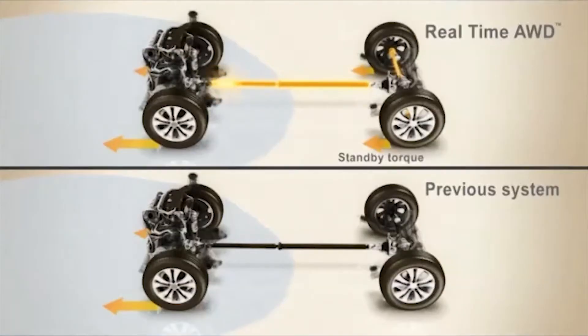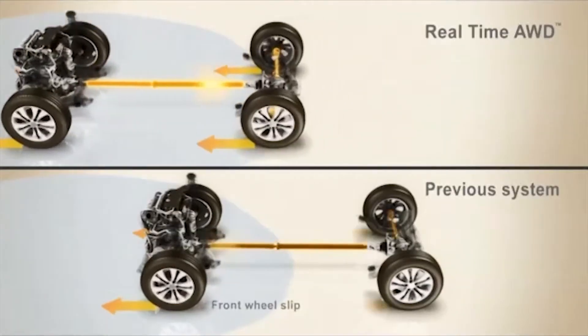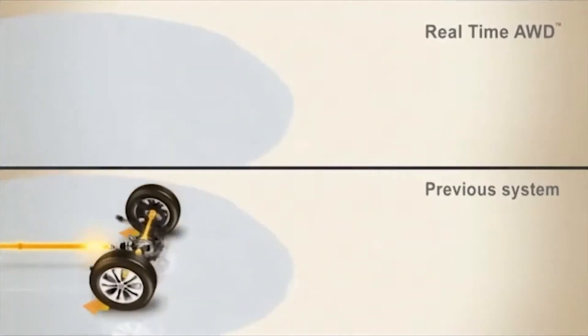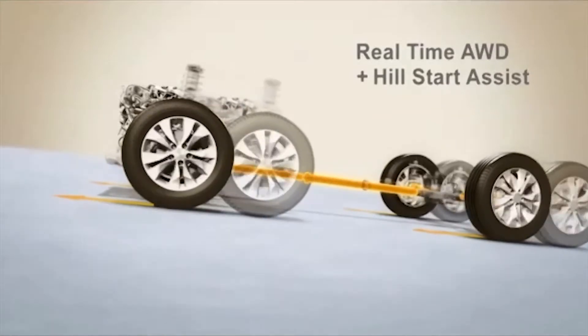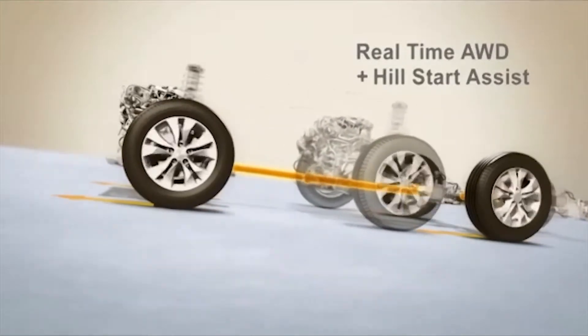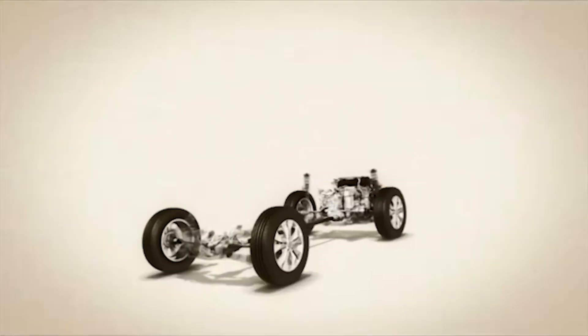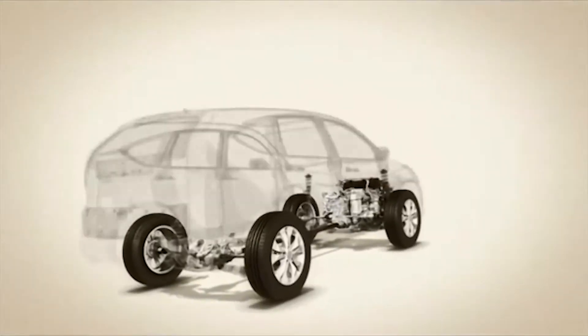In the previous system, during off-the-line acceleration on slippery roads, the rear wheels did not engage until the front wheels slipped. The new system maintains standby torque, allowing the rear wheels to grip the road immediately for greater efficiency and smoothness.